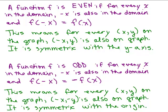In other words, when you replace x with negative x, your y value is the same — you get the same function. So this means for every ordered pair (x, y) on the graph, the ordered pair (negative x, y) is also on the graph, and it's symmetric with the y-axis.